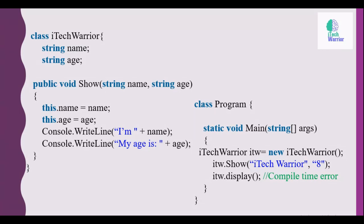And we also declare a show method, and inside the show method we pass parameters name and age. And here you can see the program class and main method. Inside the main method we create an instance of iTechWarrior, and by the instance we pass the value to show method. And here you can see one more line: itw dot display, and compile time error. It means display method not present in iTechWarrior, so the compiler shows the error at compile time. So this is the example of early binding.